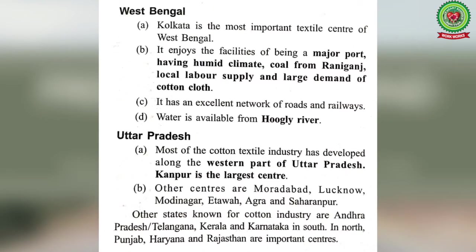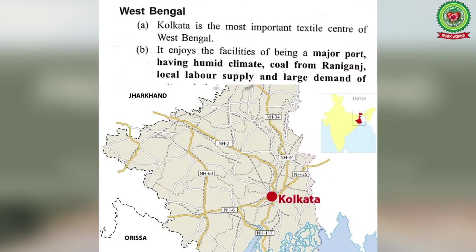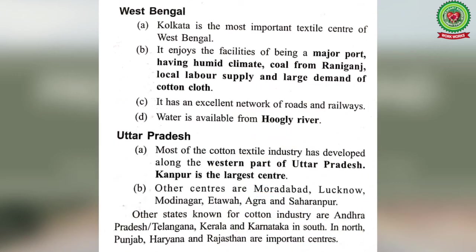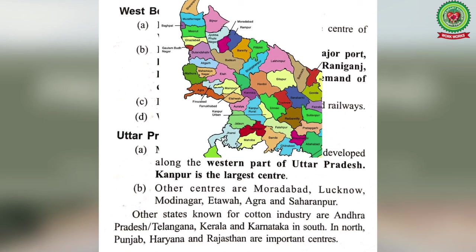Kolkata is the most important textile center of West Bengal. It enjoys the facilities of being a major port, having a humid climate, coal from Raniganj, local labor supply, and large demand for cotton cloth. It has an excellent network of roads and railways. In Uttar Pradesh, most of the cotton textile industry has developed along the western part of the state, with Kanpur as the largest center.